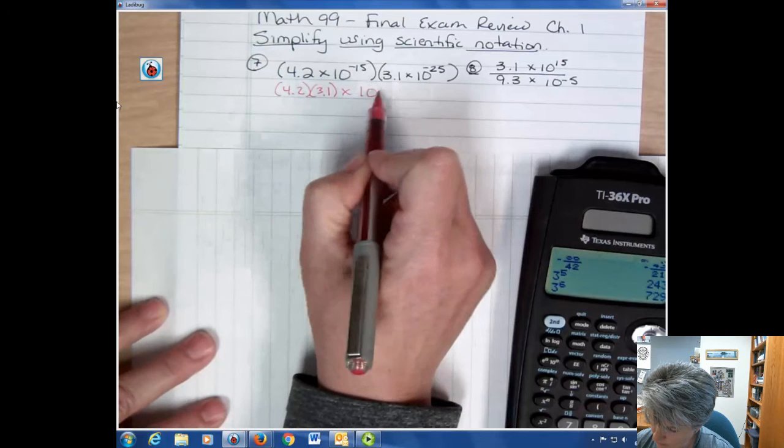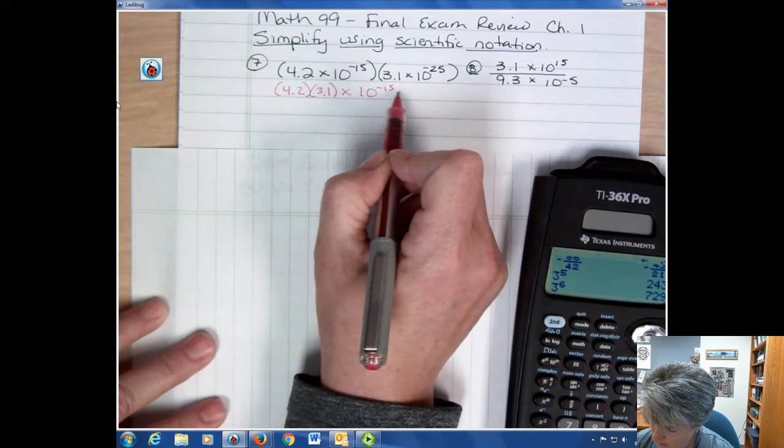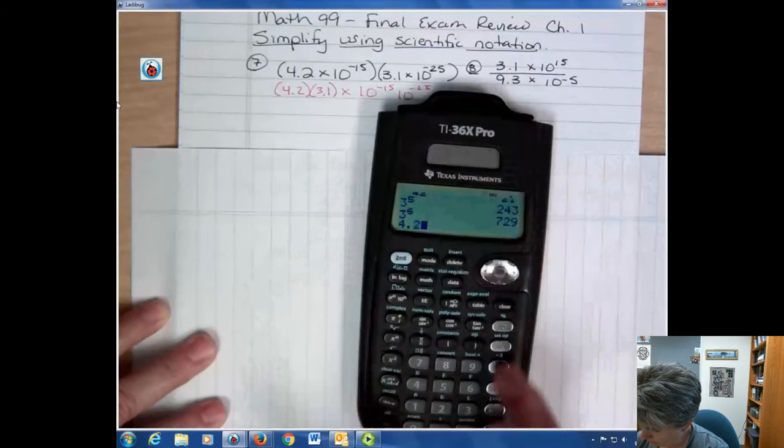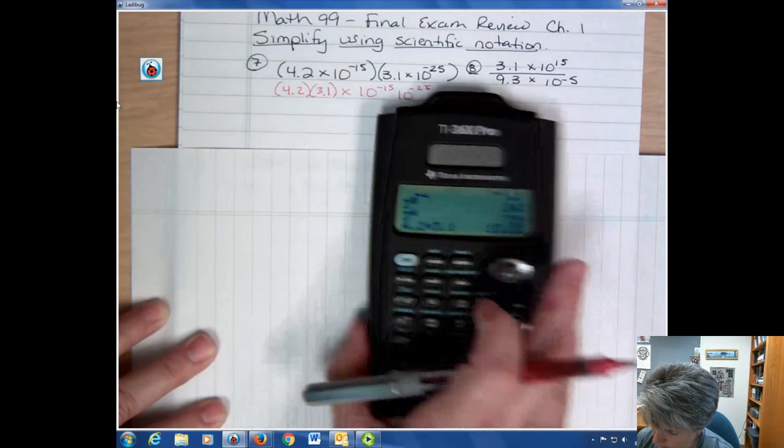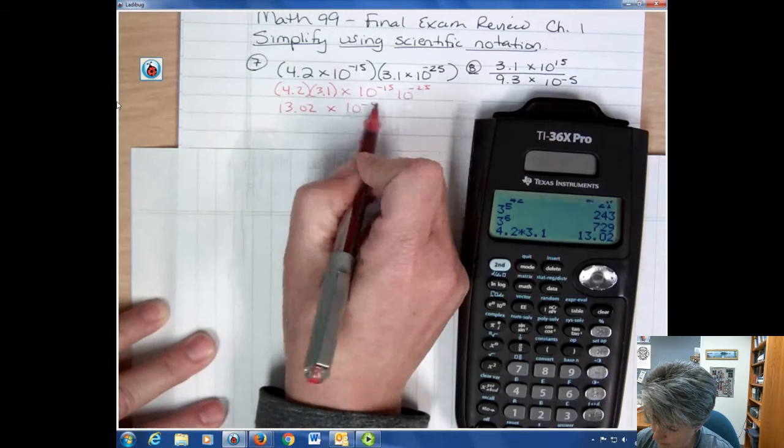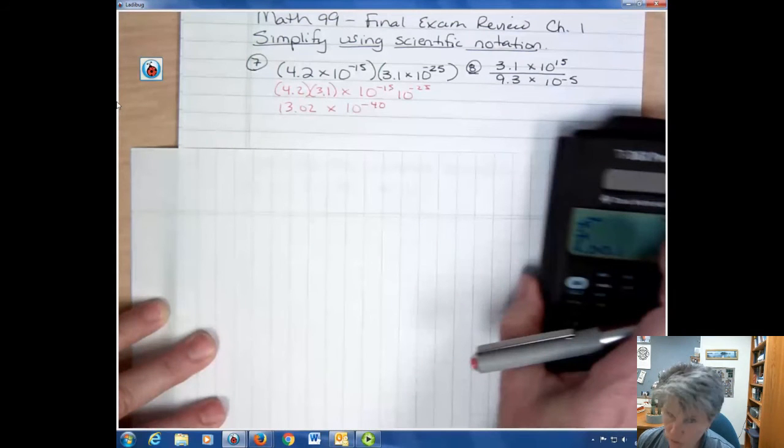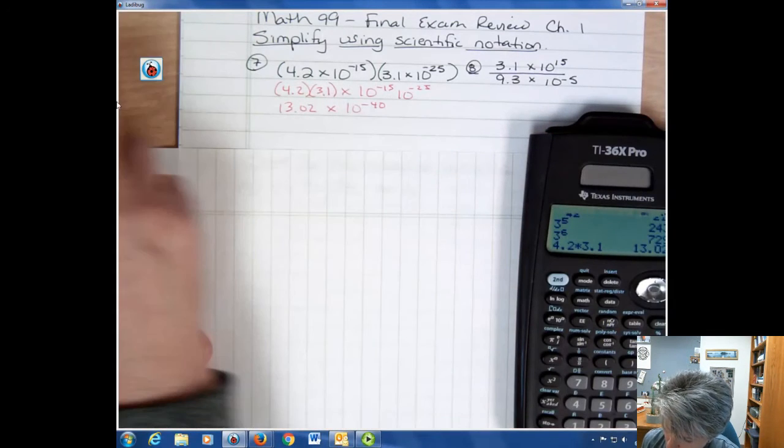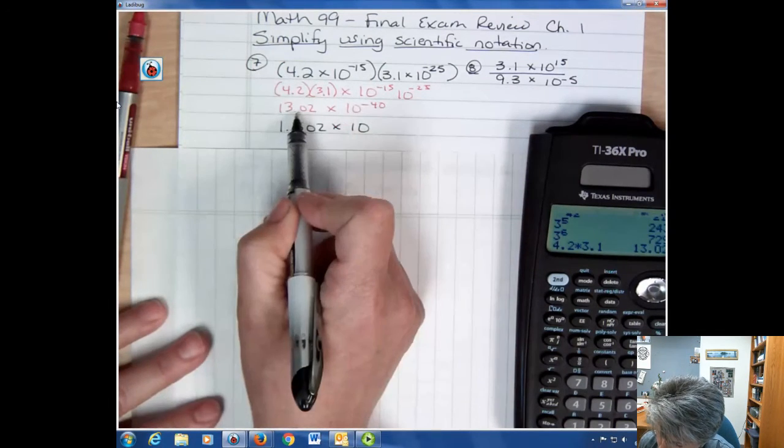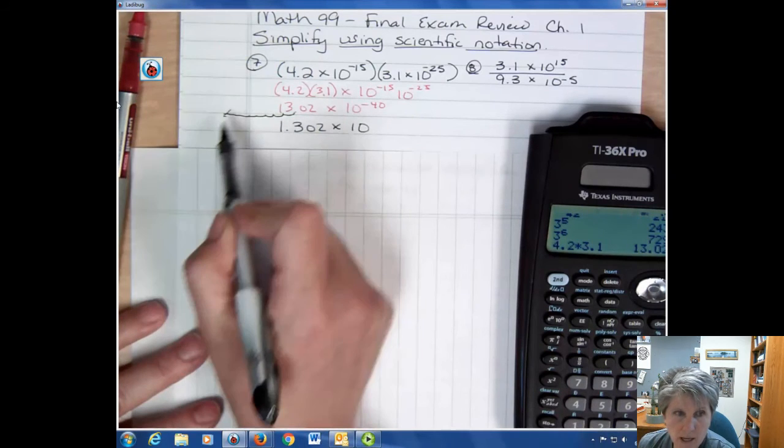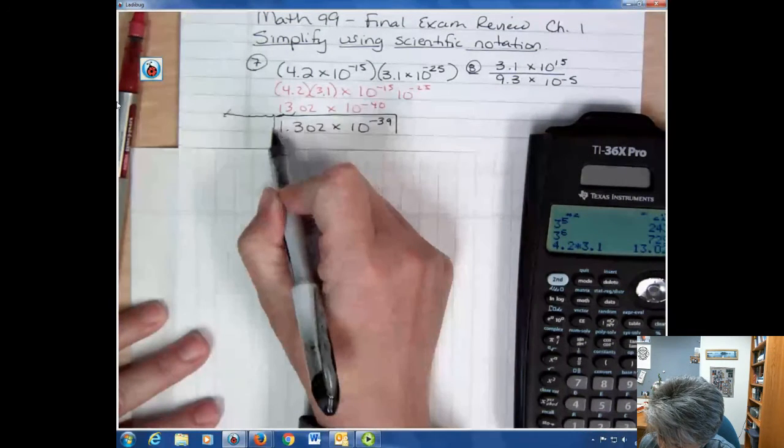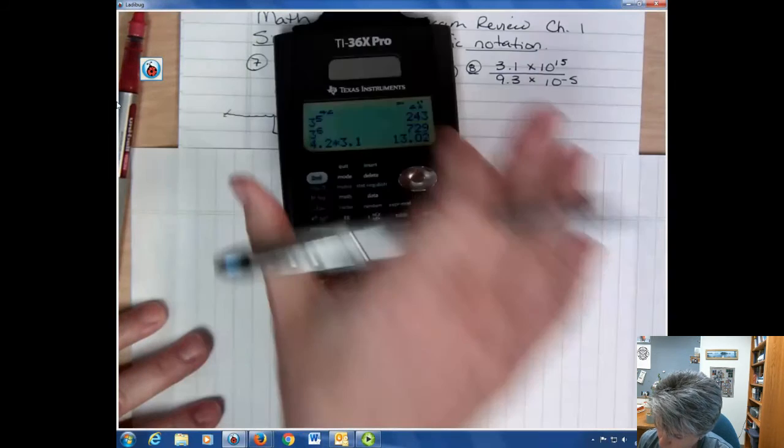If your teacher is asking you to show work, you can do it on your calculator just to check. What you can do here is multiply the numbers. And then you have your bases, your tens, you're going to add those powers together. So we get 4.2 times 3.1 is 13.02. And then we keep the base the same. We add our powers. That's going to be negative 40. But notice that this is not between 0 and 1. So I need to move the decimal point over one place. I was going to go 40 places to the right. And I took one of those steps and moved it over. So now I only have 39 places to go. I stepped in the direction I wanted to go anyway.